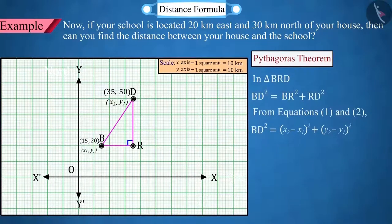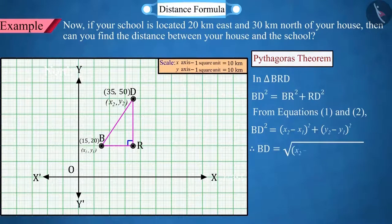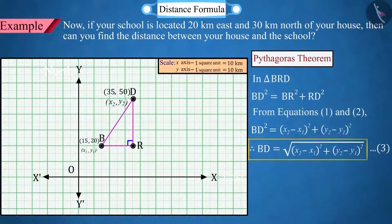From equation 3, that is, the distance between the point B (x1, y1) and point D (x2, y2), BD equals square root of the square of (x2 minus x1) plus the square of (y2 minus y1), which is called the distance formula. Since distance is always non-negative, here we will take the positive square root.